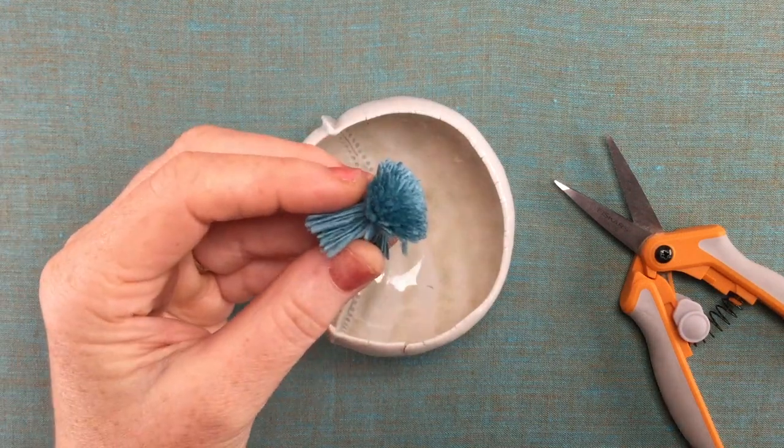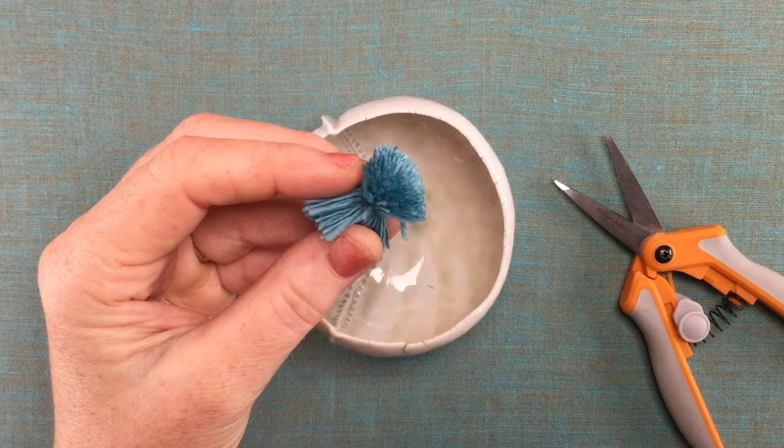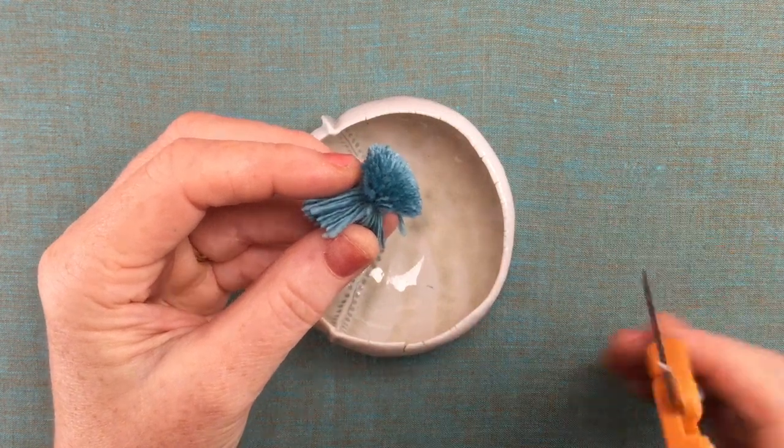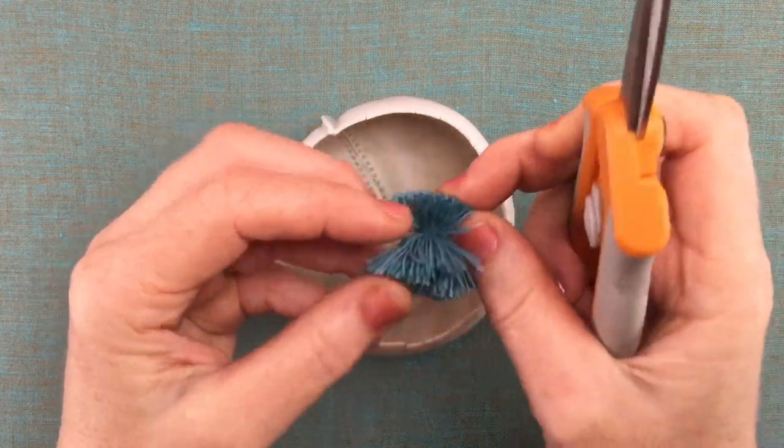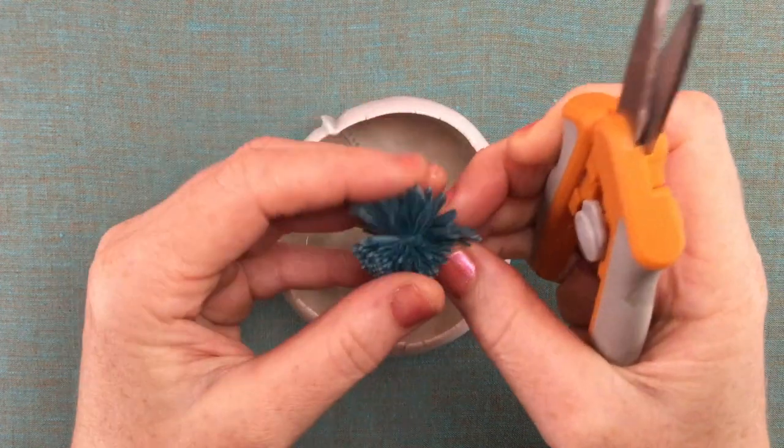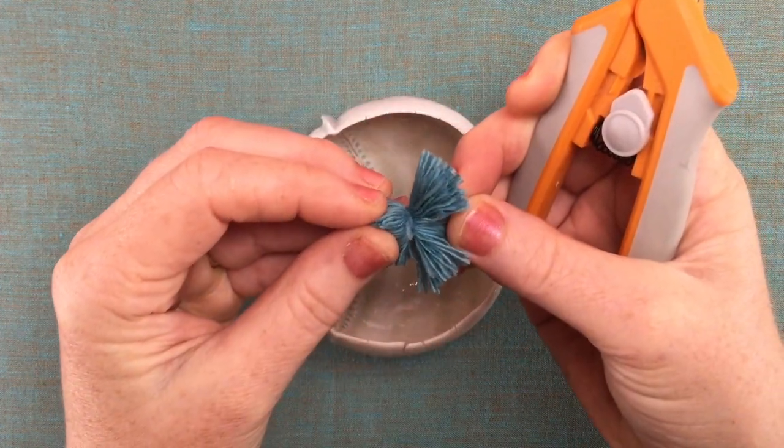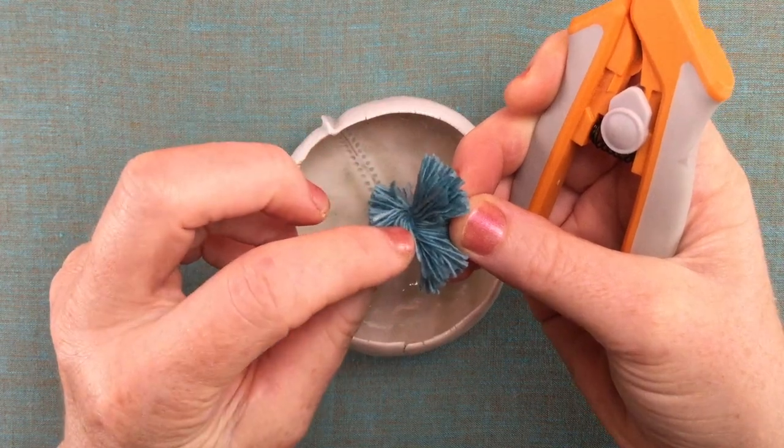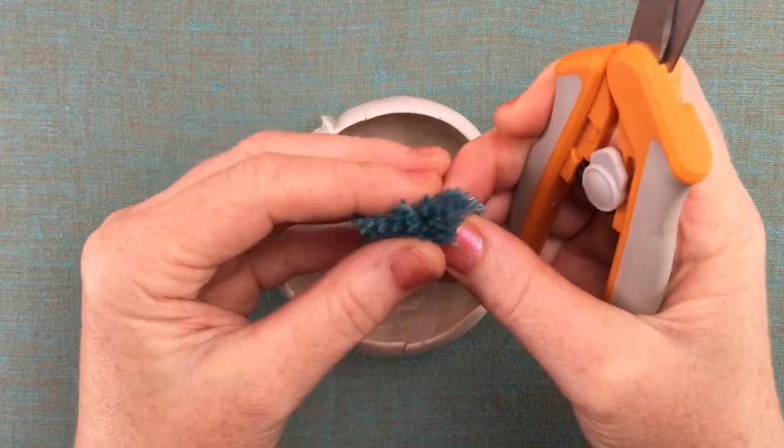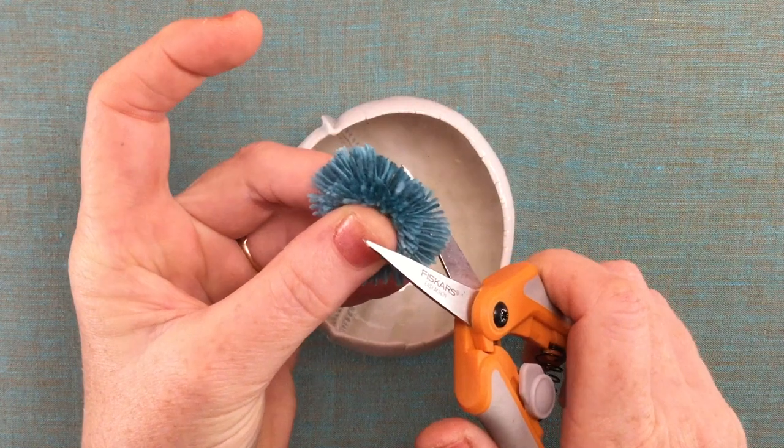So for trimming you'll need a small sharp pair of scissors. What we're going to do here is first let's just take a look at the way we're holding it. Do you see how there's the center binding here?